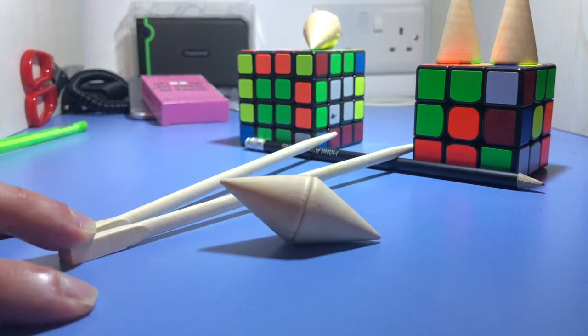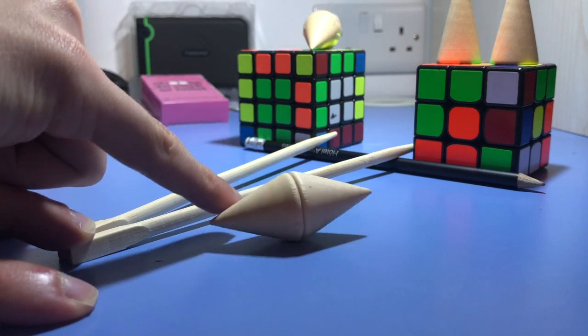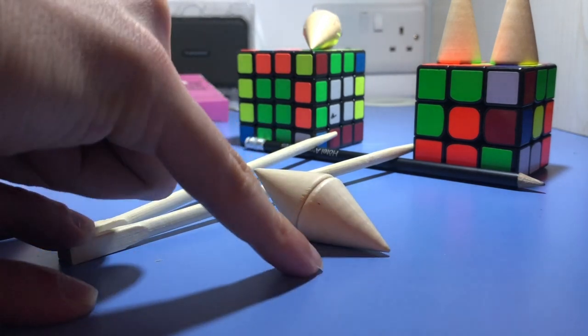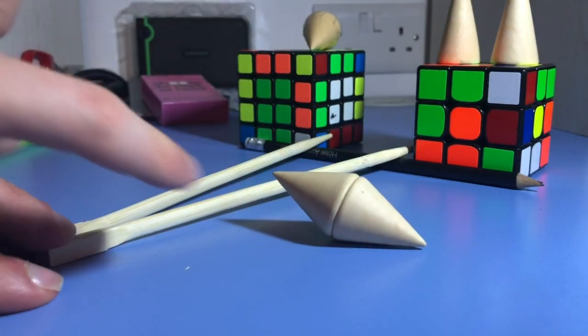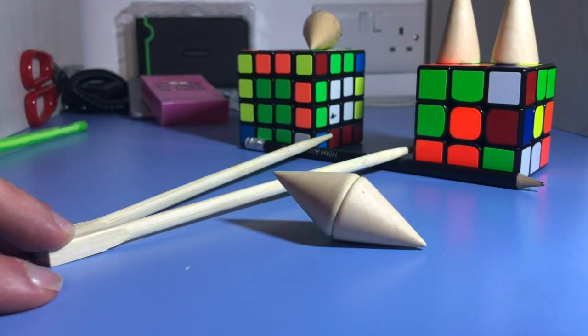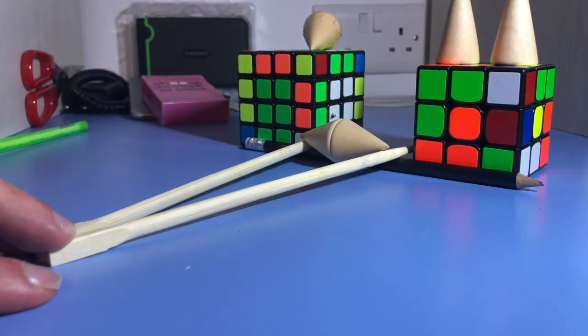But now I consider this shape. It's a cone which is glued to another cone like that. So what happens if I try to slide this guy down? Let me put it on top. It doesn't really want to slide.